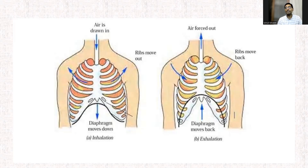In the initial part of expiration, the elastic recoil of the lungs and the recoil of the ribcage act in the same direction. But towards the end of expiration, the ribcage exerts a force opposite to the elastic recoil of the lungs. And once these two forces balance out, the expiration stops.